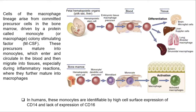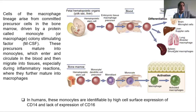When precursor cells land in the brain, they mature and differentiate to become microglial cells. When the same cells enter the liver, they differentiate to accommodate the liver environment and become Kupffer cells. In adults, bone marrow produces hematopoietic stem cells, which produce monoblasts or monocytes — still immature. Once monocytes enter the skin, they differentiate and convert into the macrophage of the skin, designed to stay and fight bacteria entering through the skin.